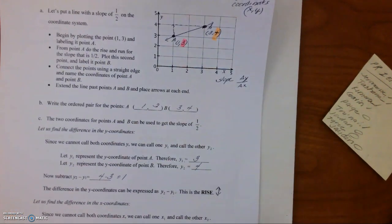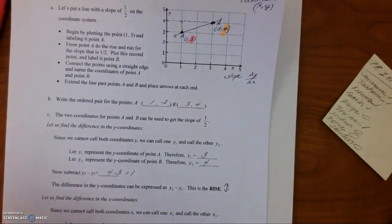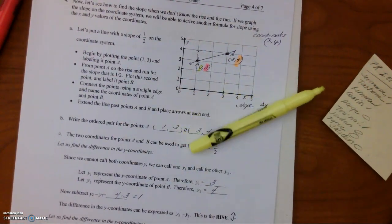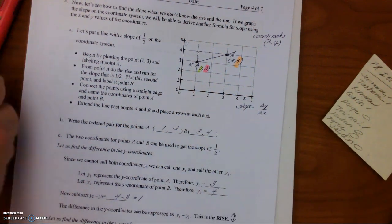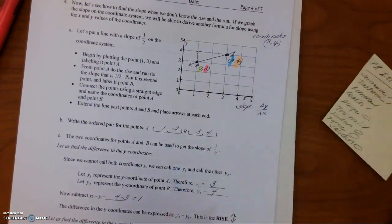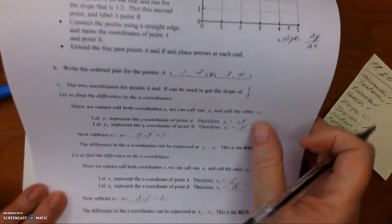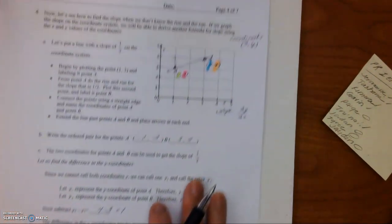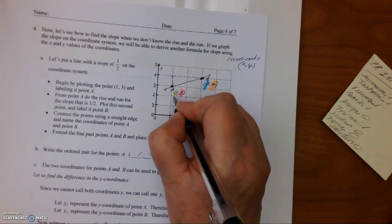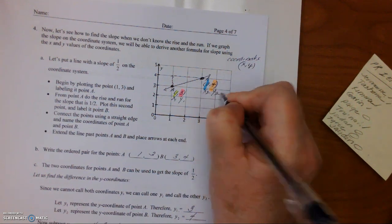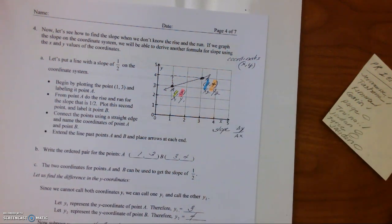Now let us find the difference in the x-coordinates. Let x1 represent 1 and then x2 will be 3. So x2 minus x1 is 3 minus 1 equals 2, and this is the run that goes from left to right. So just to reiterate, this will be x1, y1, and this will be x2, y2, how we did it down here.